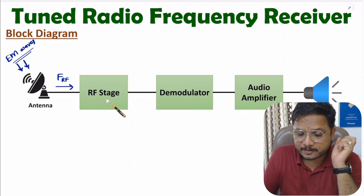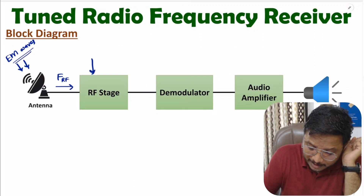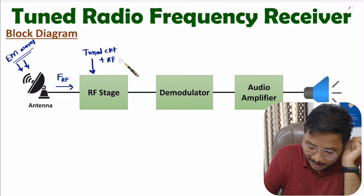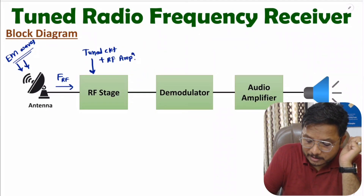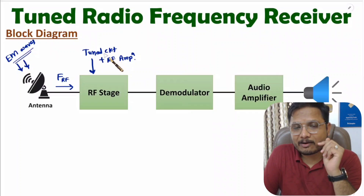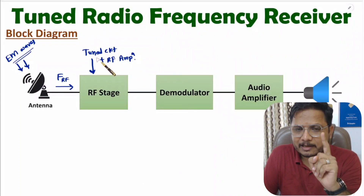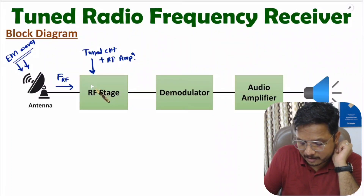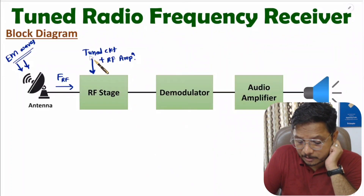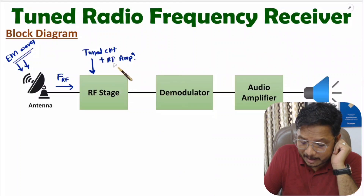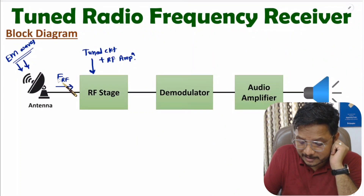This RF signal is given to the RF stage. In the RF stage we have two elements: first is the tuned circuit, and second is the RF amplifier. The tuned circuit is required to tune a particular channel — I will explain this with a practical example. The RF amplifier is needed because the received signal is weak in strength.